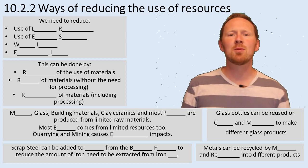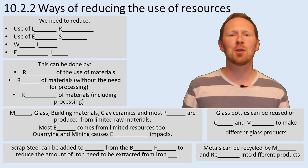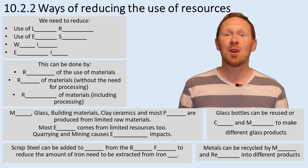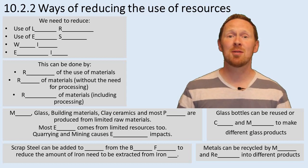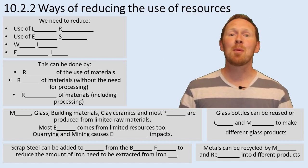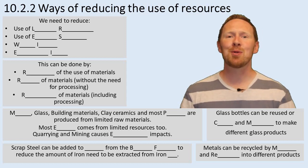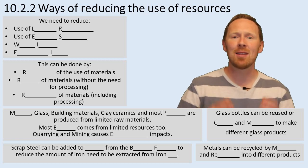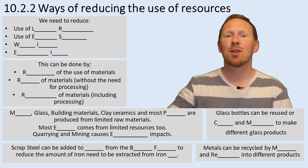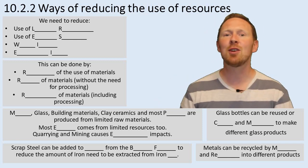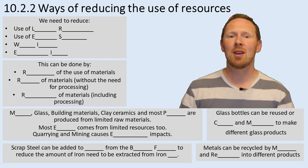10.2.2 — ways of reducing the uses of resources. We need to reduce. Remember we talked about sustainable development: we were talking about meeting the needs of the current generation without imposing on the ability of future generations to meet their own needs.